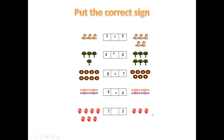Now the next one. Count: 1, 2, 3, 4, 5, 6, 7 — 7 balloons. Here we have 3 balloons. Which is bigger? 7. So 3 is the smaller number. 7 greater than 3. What sign will you put? Open mouth to the 7. So: 7 greater than 3, 4 equals 4, 8 greater than 7, 4 less than 6, 3 less than 5.